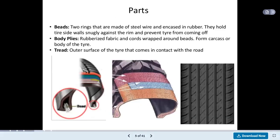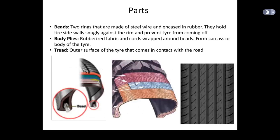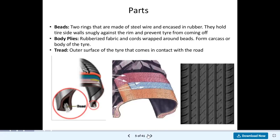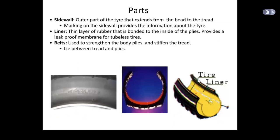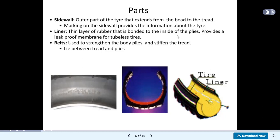Looking at the parts: beads are two rings made of steel wire encased in rubber — they hold tyre sidewalls snugly against the rim and prevent the tyre from coming off. Body plies are rubberized fabric and cords wrapped around the beads, forming the carcass or body of the tyre. The tread is the outer surface of the tyre that comes in contact with the road. The sidewall is the outer part of the tyre that extends from the bead to the tread. Markings on the sidewall provide information about the tyre. The liner is a thin layer of rubber bonded to the inside of the plies, providing the leak-proof membrane for tubeless tyres. Belts are also available, used to strengthen the body plies and stiffen the tread — they lie between the tread and the plies.